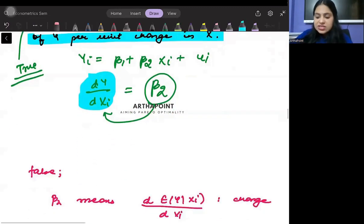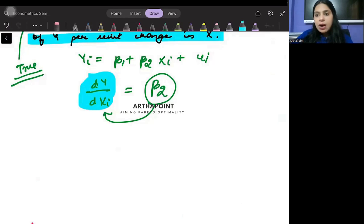But in fact this is an incorrect statement. The answer is that we don't say beta 2 is the amount by which y changes when x changes.